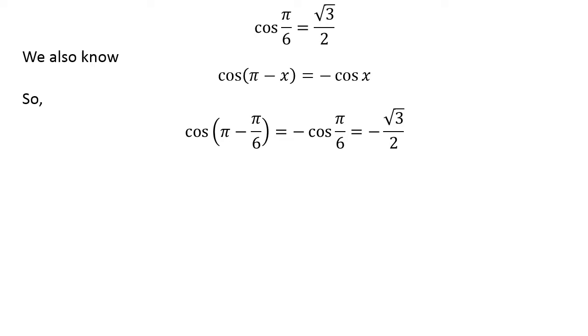So, cosine of pi minus pi upon 6 is equal to minus square root of 3 upon 2. As pi minus pi upon 6 is equal to 5 pi upon 6, cosine of 5 pi upon 6 is equal to minus square root of 3 upon 2.